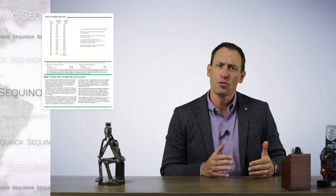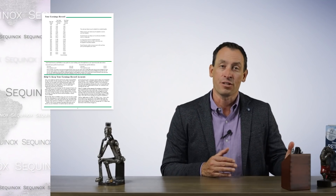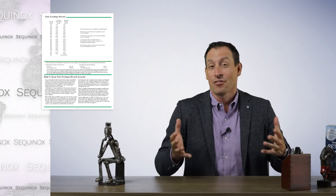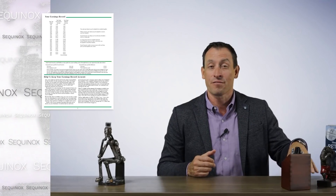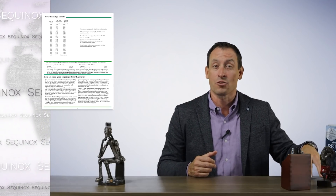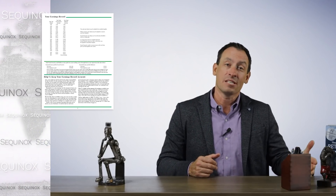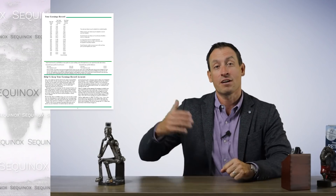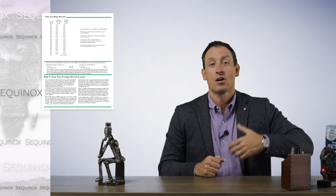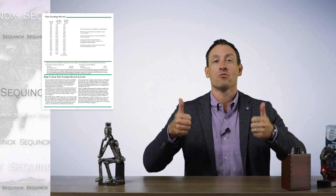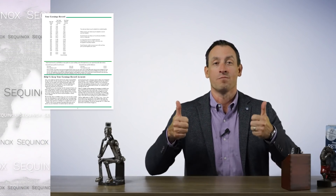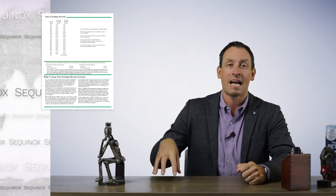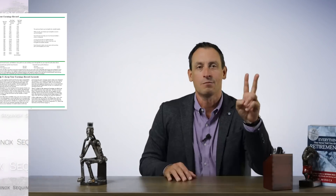If you go through the report and you count 33 numbers — because they're going to count 35 numbers — if you have 33 years of earnings and two zeros in there, if you work two more years, you'll get rid of those zeros and replace them with your current income. That will raise your benefits. Simple, easy. Order your report every single year and look at it.